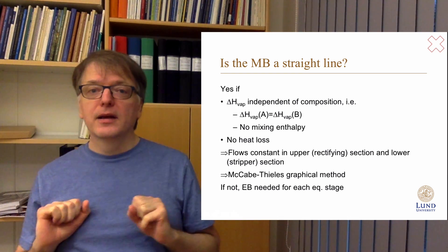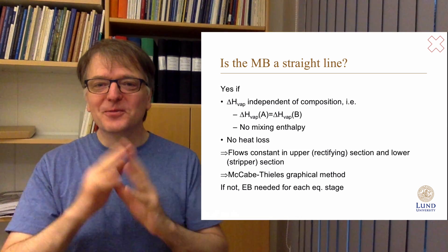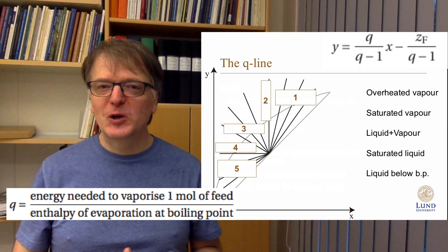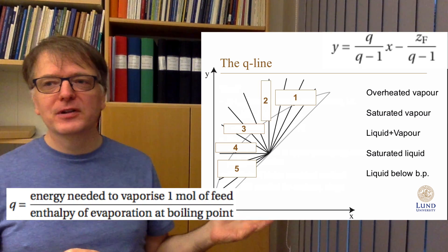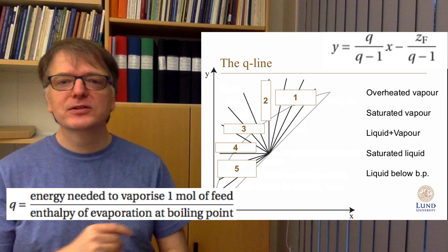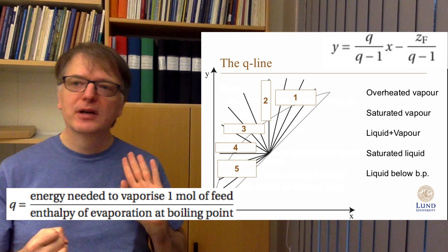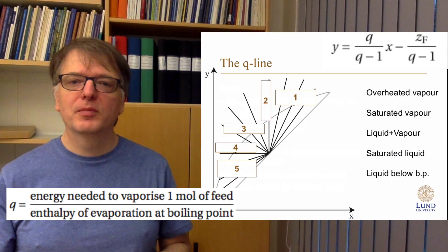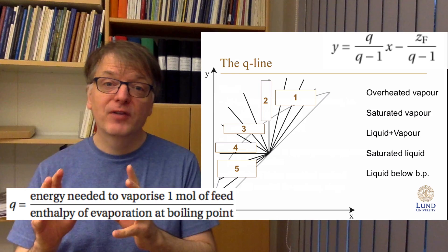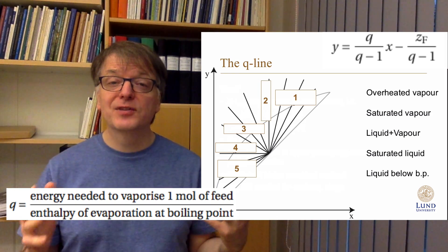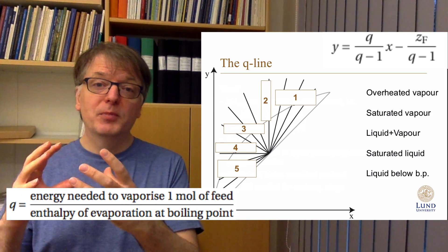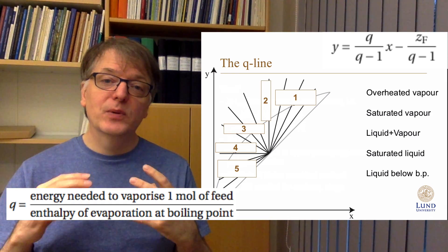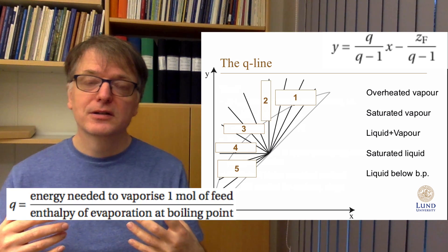Let's try once more. We've talked about the Q line — what is its slope? There are five cases: overheated vapor, saturated vapor, mixed liquid-vapor, saturated liquid, and liquid below boiling point. In the context of distillation, saturated vapor is a gas at its condensing point, and a saturated liquid is a liquid at its boiling point. Each case corresponds to a different slope for the Q line.